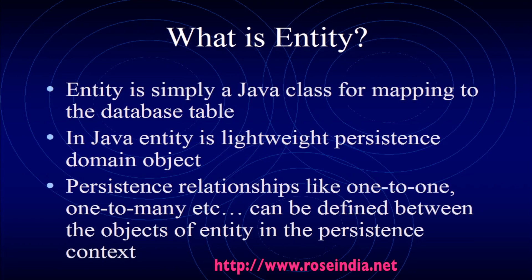So what is an entity? An entity is simply a Java class for mapping to a database table. In Java, an entity is a lightweight persistence domain object. Persistence relationships like one-to-one, one-to-many, etc. can be defined between objects of an entity in a persistence context. An entity is simply a Java class with setters and getters that maps to a table in a database.